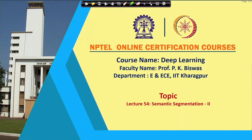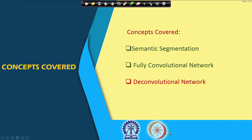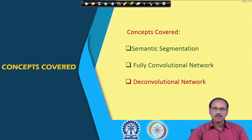Hello, welcome back to the NPTEL online certification course on deep learning. We are discussing the problem of semantic segmentation of images using the deep learning approach. In our previous class, we talked about a fully convolutional neural network used for semantic segmentation. In today's lecture, we will talk about another kind of network — the deconvolutional neural network — for the same semantic segmentation purpose.